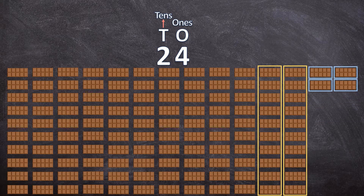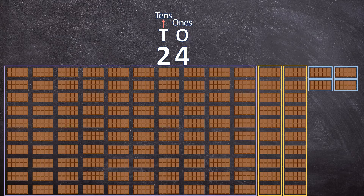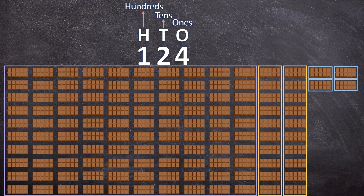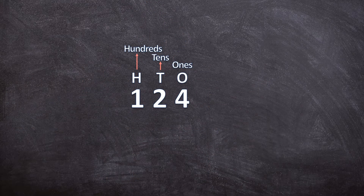Here we have a group of a hundred chocolates, so one hundreds. We have one group of a hundred chocolates, two groups of ten chocolates, and four groups of one single chocolate — a hundred and twenty-four chocolates in total. Now let's see if you can remember all the place values: ones, tens, hundreds.